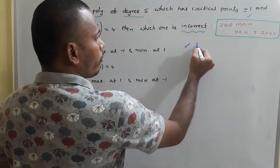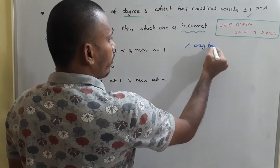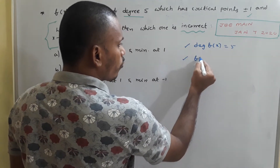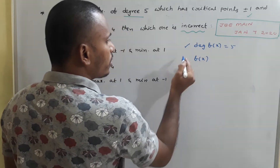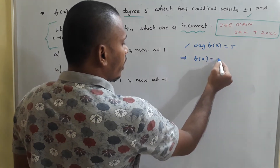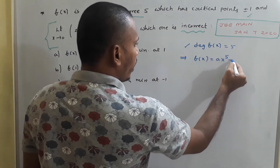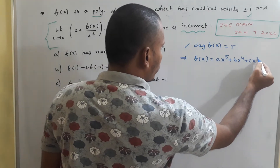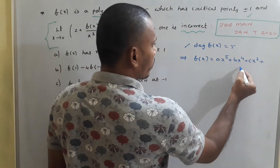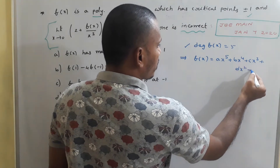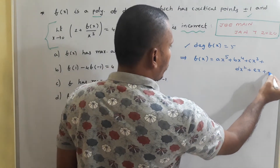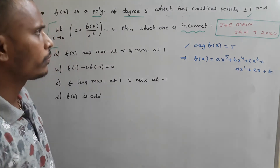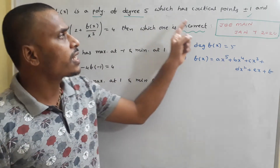Since f(x) is a polynomial of degree 5, we write it as: f(x) = ax⁵ + bx⁴ + cx³ + dx² + ex + f, a general fifth-degree polynomial.